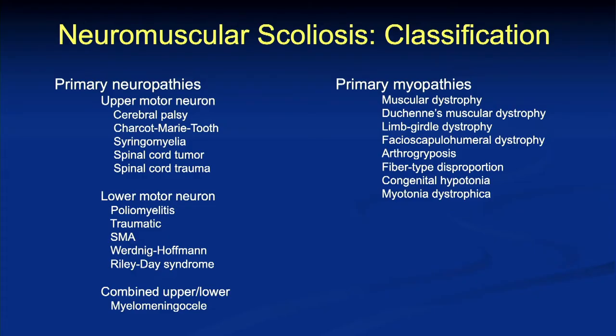Before I get into complications and reasons for complications, it's very important to understand that when we think of neuromuscular scoliosis, it is a wide spectrum of different diagnoses. From the SRS classification: primary neuropathies, upper motor neuron diagnoses, lower motor neuron diagnoses, and primary myopathies. A lot of what I'll be speaking about today will be focused on the patient with cerebral palsy — that's where we have the most available data. But please understand there's a whole set of other diagnoses with their own nuances.